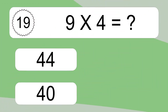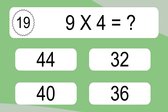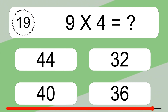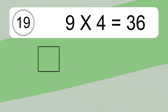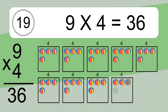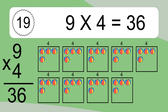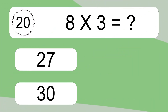9 times 4 equals what? 9 times 4 equals 36. We have 9 boxes, and each box has 4 colorful balls inside. If you count all the balls in all the boxes together, you will have 9 times 4 balls. This equals 36 balls.